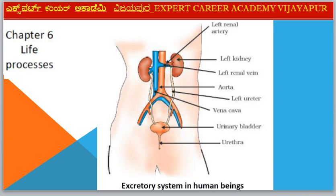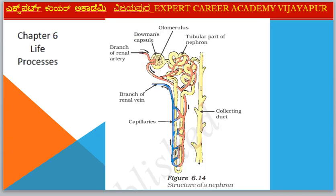Next diagram — Chapter 6: Life Processes. Diagram: Structure of Nephron, with all labeled parts.